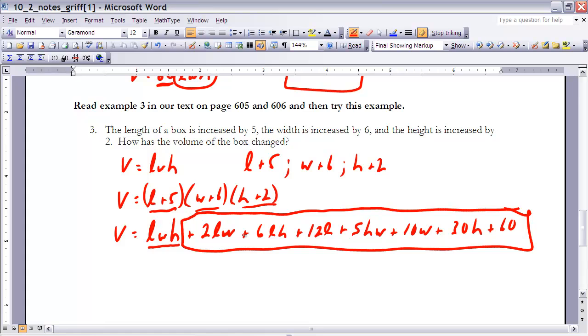Because we started out with a volume of length times width times height. So this other stuff right here would represent how the volume has changed when I add 5 to the length, and add 6 to the width, and add 2 to the height. Notice how each one of these has one value from each of the different sums. So for instance, if I look at this one here, 5HW, I have a 5, I have a W from this one, and I have an H from this one. Now some of them where they only have 2 like 12L, notice how that's going to be L from this one, 6 from this one, and 2 from this one. So when I simplified it, it became just 12L. So this is how that volume would change.